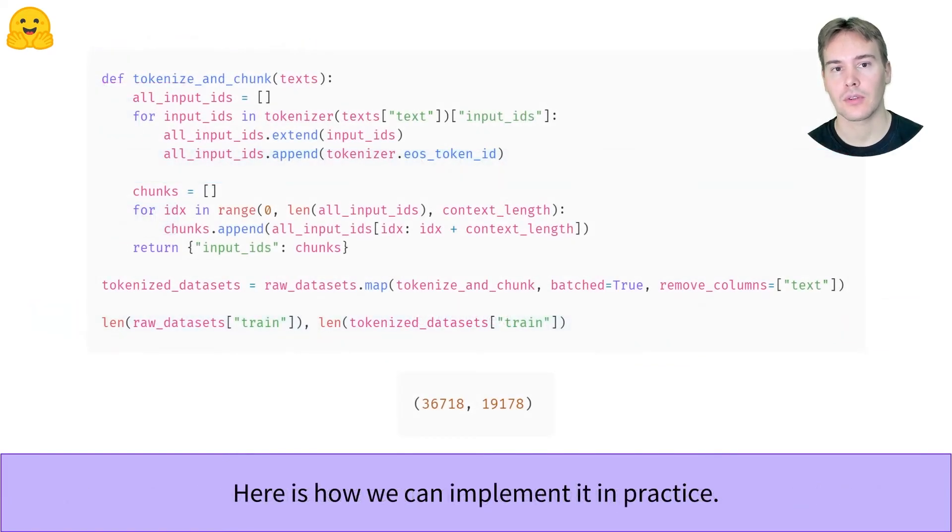Here is how it can be done with code, with one loop to concatenate all the texts and another one to chunk it. Notice how it reduces the number of samples in our dataset here. There must have been quite a few short entries.